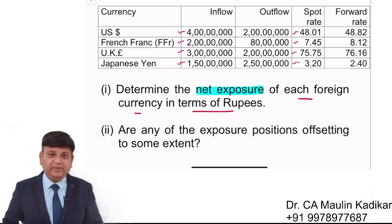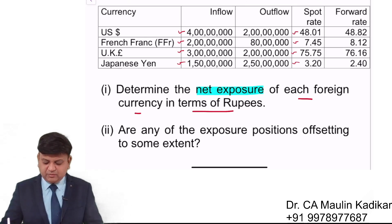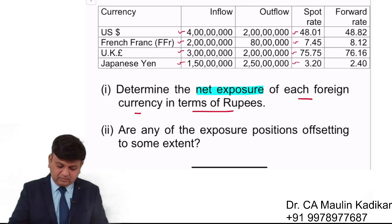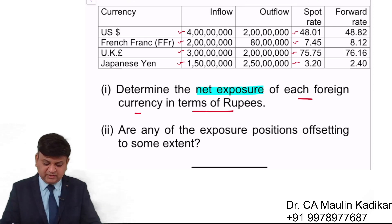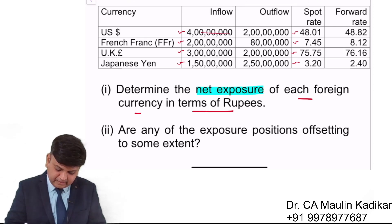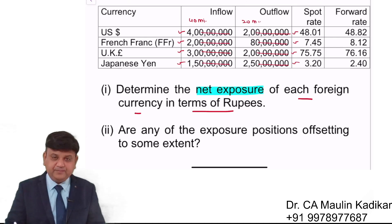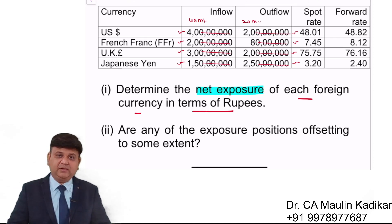The net exposure of each foreign currency in terms of rupees is the first question, and then there is a second question. The amount that we are going to receive is 40 million, and 20 million is what we are going to pay. Net, we are going to receive 20 million in the dollar foreign currency.